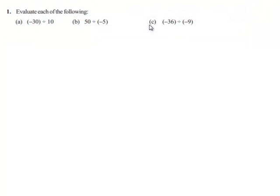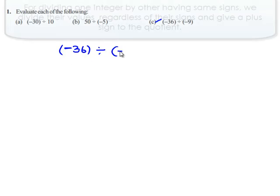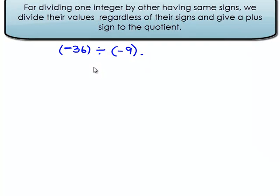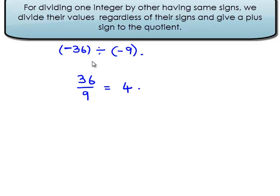We will see the third problem. The question is, negative 36 divided by negative 9. When we divide two integers, first we divide their values regardless of their signs. That is, 36 divided by 9 gives 4. When we divide two integers having similar signs, we always get a positive sign in the answer.